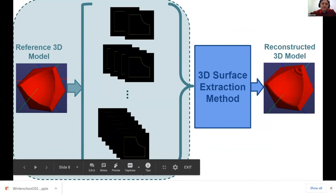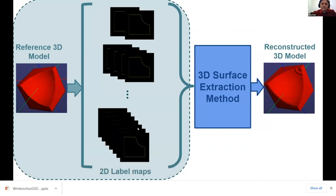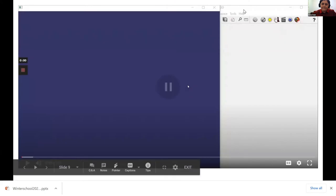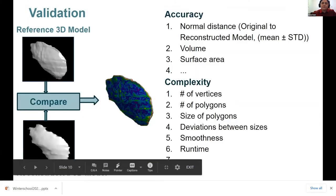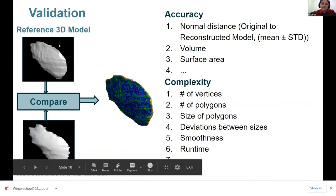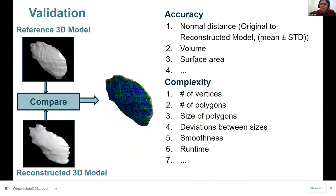What we did was to use the reference 3D model to extract the 2D label maps. These are the datasets that we will provide. And then the 3D surface extraction methods will reconstruct the 3D model. In the next step, we will validate the accuracy and efficiency of the reconstruction methods by comparing the reference and the reconstructed surfaces. For the accuracy, I have used normal distance between the original and reconstructed models, the volume and surface area, and for complexity, number of vertices, polygons, size of polygons, runtime, and other variables can be used.